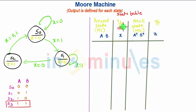So we will start from S0. Let us consider that S0 is the reset state. That means whenever you will power on this circuit, the machine will start from S0 state.